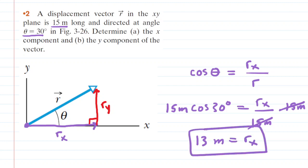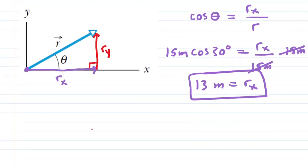That is the correct answer for r sub x. Let's look at r sub y. Again, we'll use trigonometry. This time the sine of the angle equals the side opposite the angle, which is r sub y, over the hypotenuse of our right triangle, which again is r.